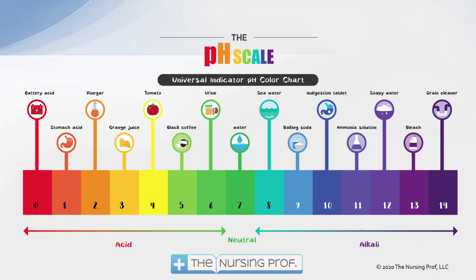If we take a look at the pH scale here, you can see what we'd call neutral is 7 in the middle, and the scale goes from 0 to 14. On the low end, you can see that we go all the way down to battery acid and move our way up to stomach acid, vinegar, orange juice, tomatoes, black coffee, urine at 6, water at 7, and then we start moving up into more of an alkaline scale. On the scary end of the alkaline state, we have drain cleaner, followed by bleach and soapy water, ammonia, ingestion tablets, baking soda, and then back down to seawater and water.